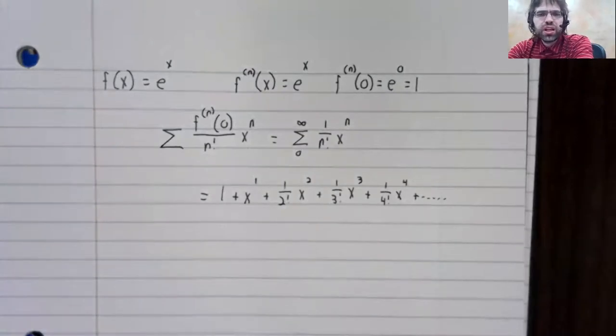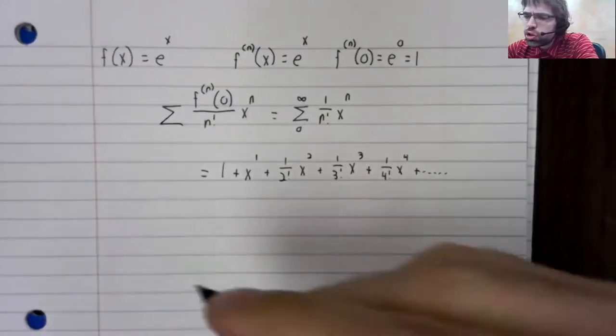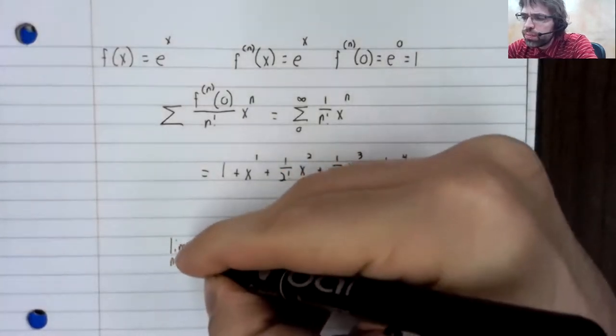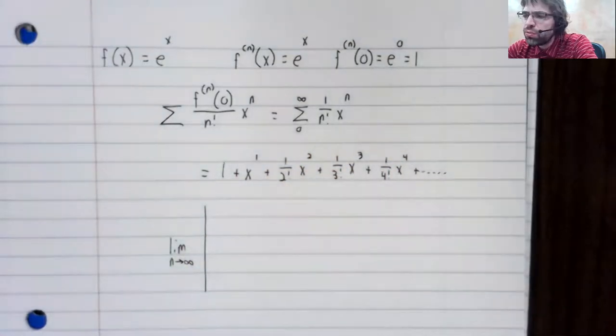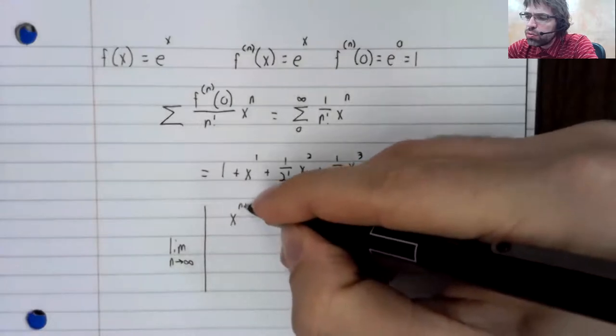This is the Taylor series. It converges everywhere. We might as well show that or this will be a pretty brief video. We'll use the ratio test.